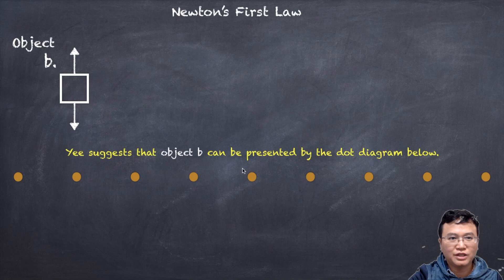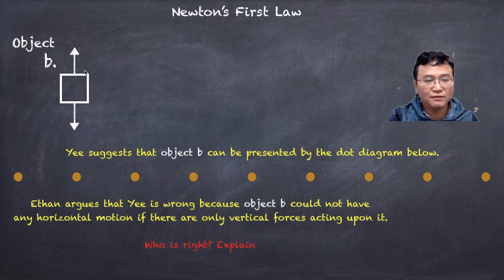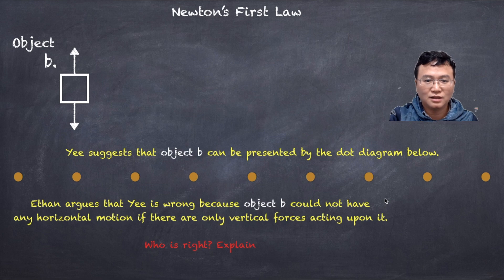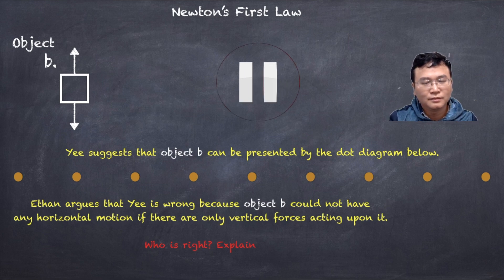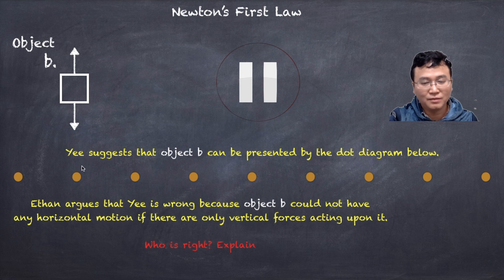YI suggests that object B can be represented by the dot diagram shown. Ethan argues that YI is wrong because object B could not have any horizontal motion if there is only a vertical force acting on it, based on the free body diagram. However, Ethan's reasoning is not quite correct, because just because the net horizontal force is zero does not mean the object cannot be moving. The object can still be moving horizontally at a constant velocity.